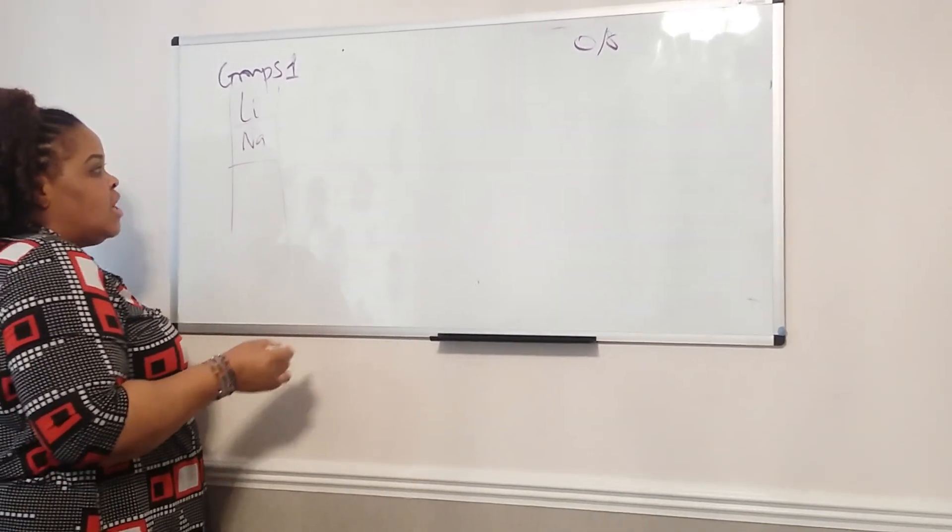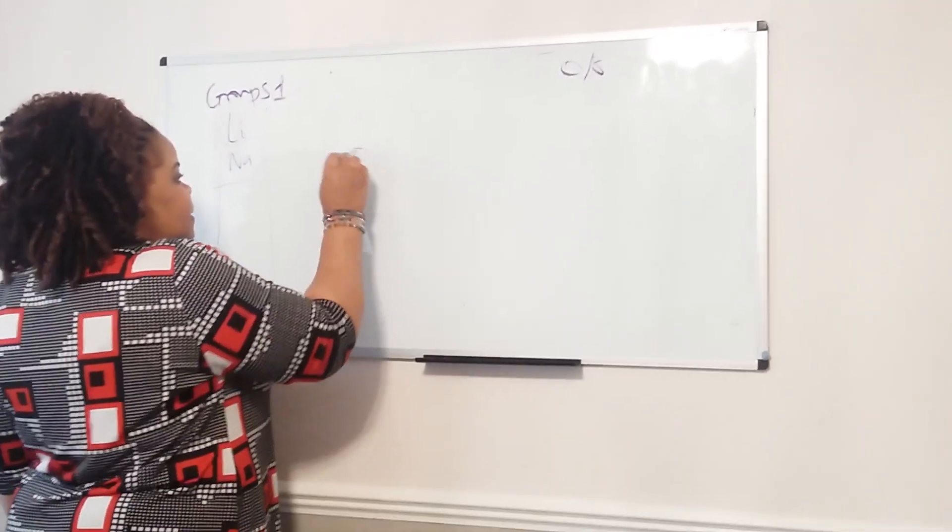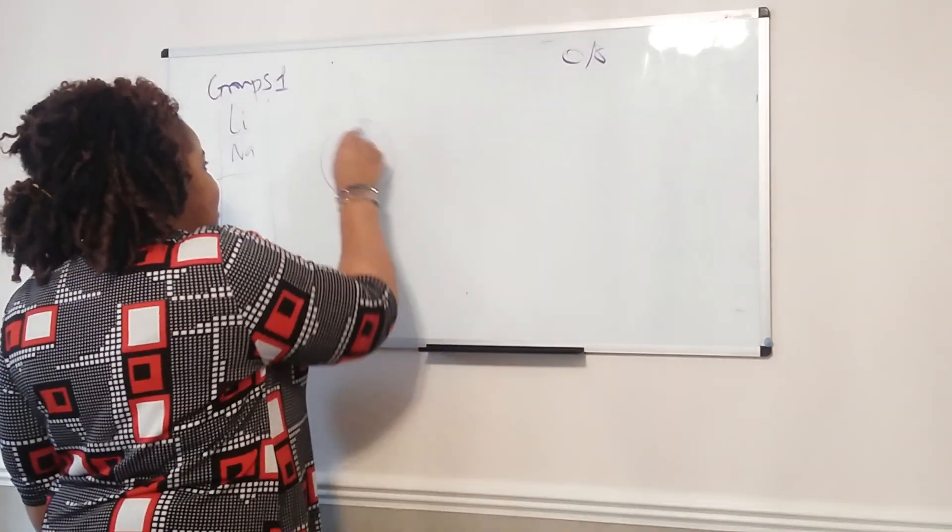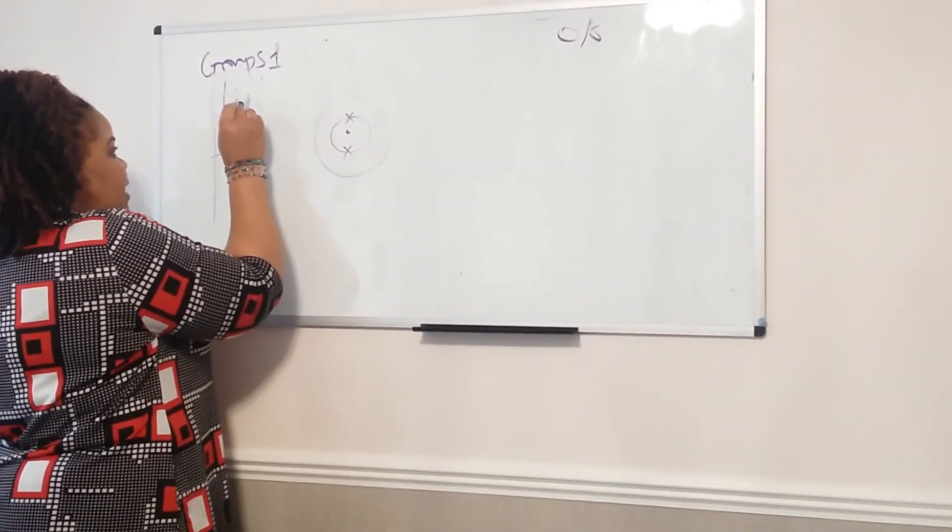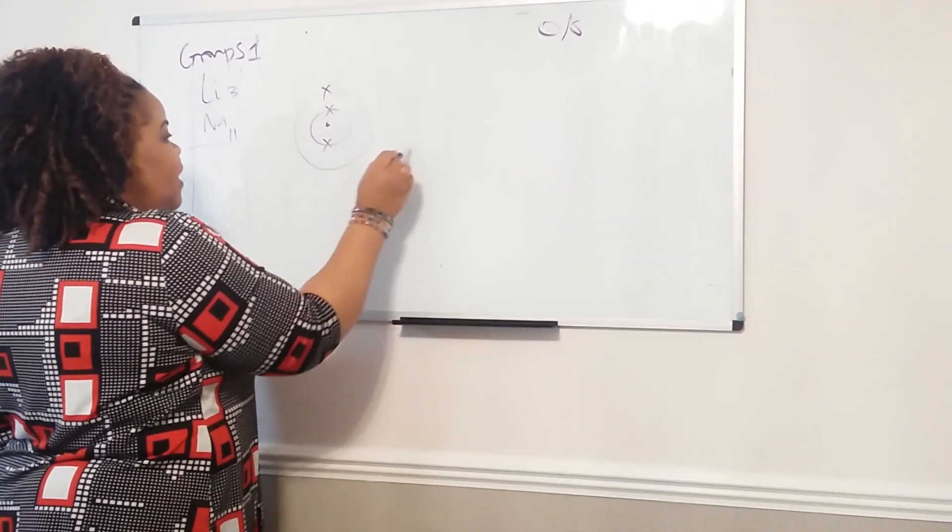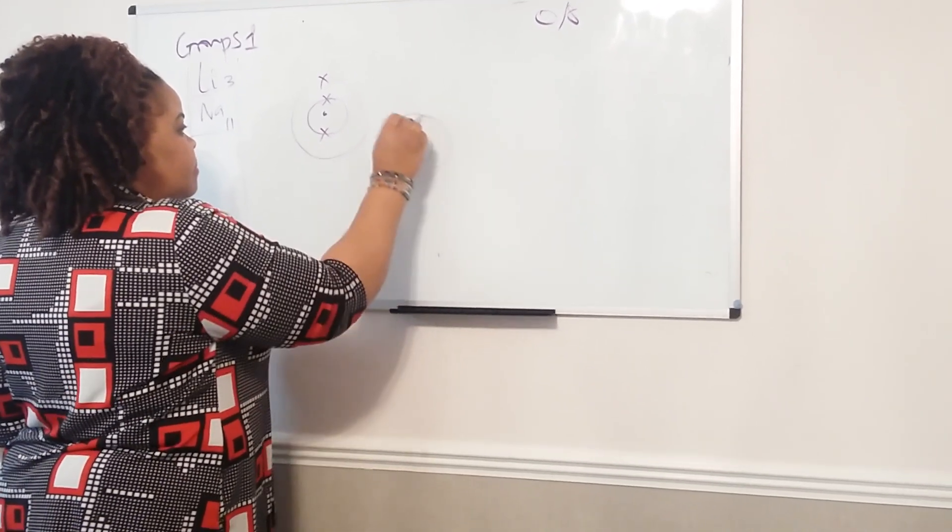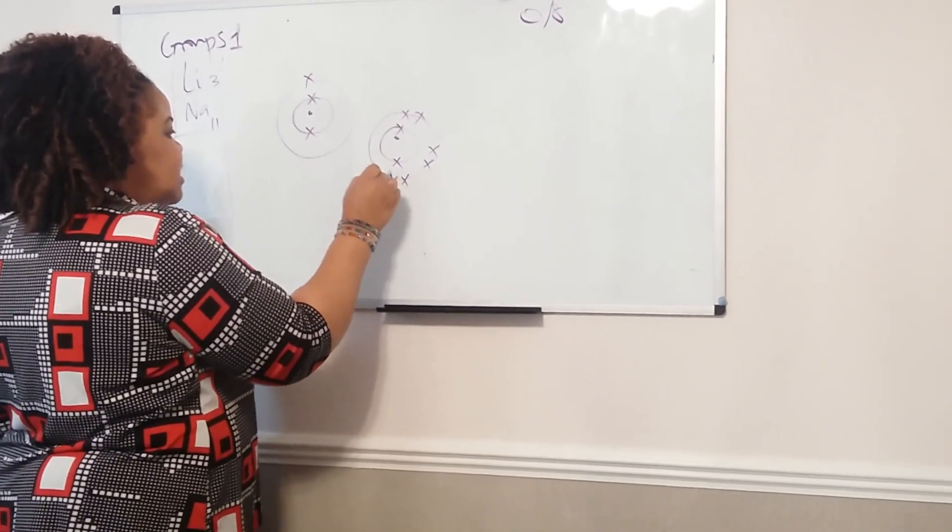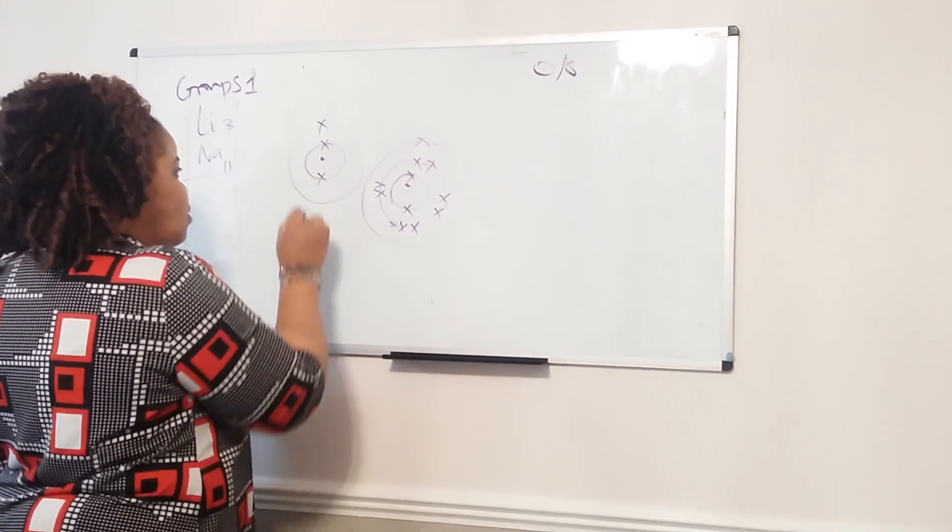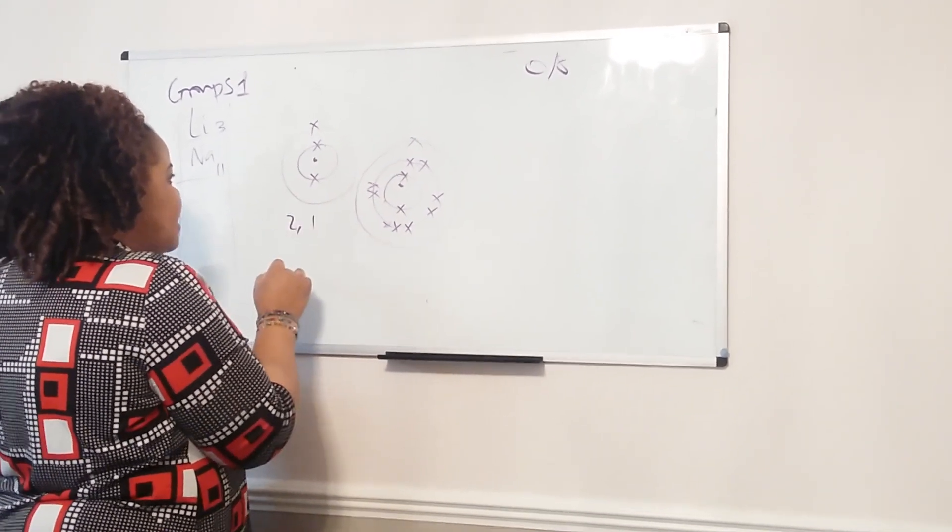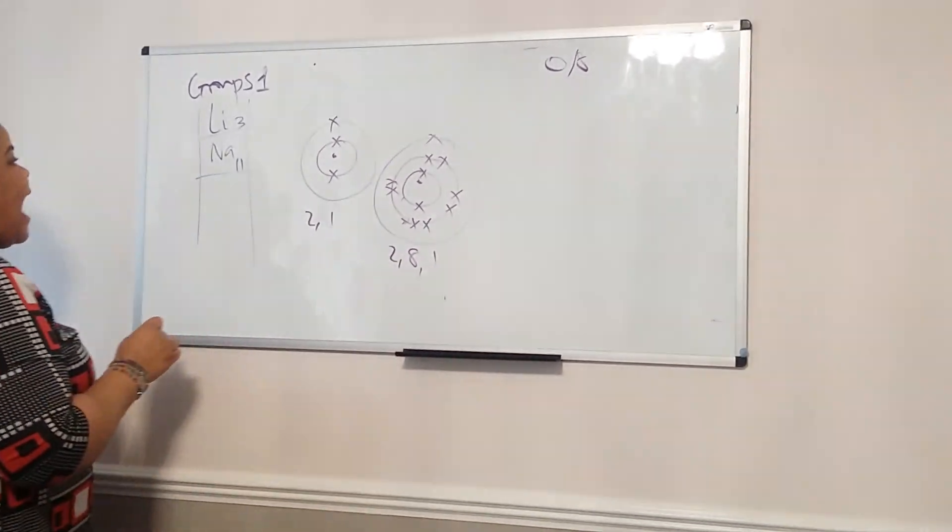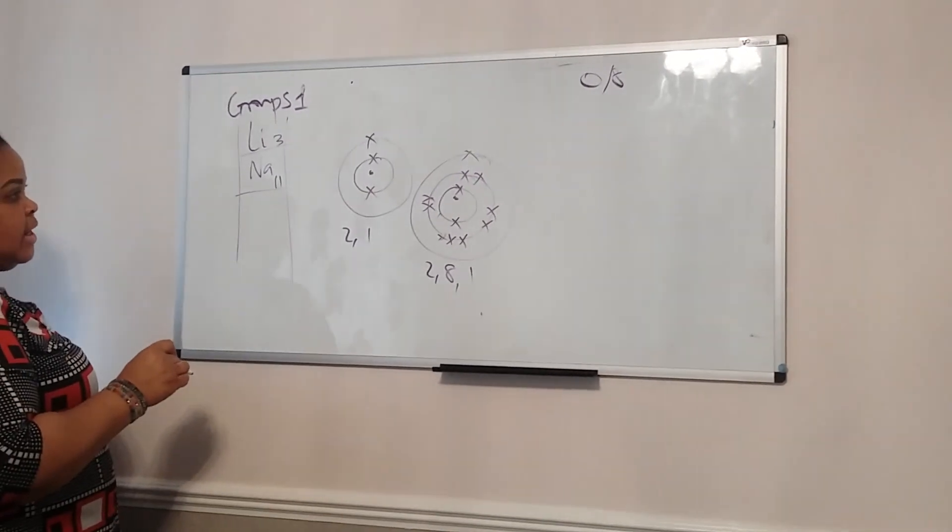If you were to arrange their electrons in shells - I'll explain how that works in a minute. If you've forgotten the cross and dot diagram, if you arrange them in shells, lithium has got 3, and sodium has got 11. So that would be lithium, and this would be sodium. If you remember drawing this in year 9, this is just a quick reminder. This is called electronic structure. So this would be 2-1, and this will be 2-8-1. This is how they are arranged on the periodic table.